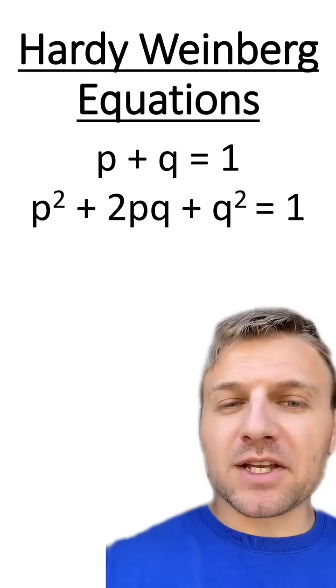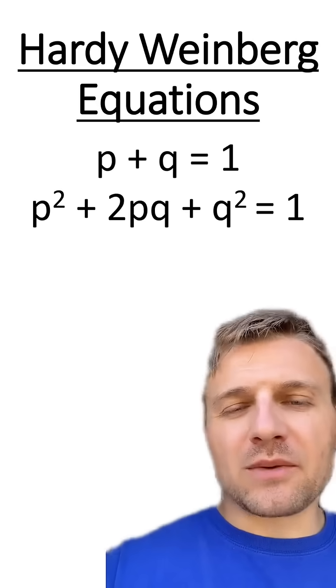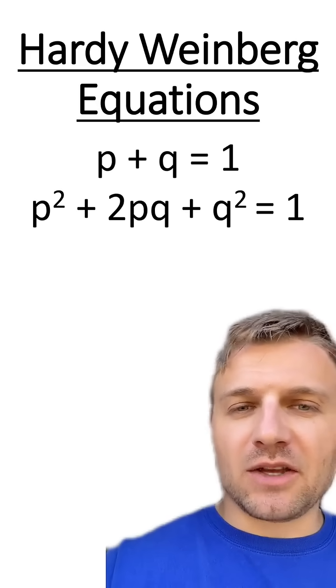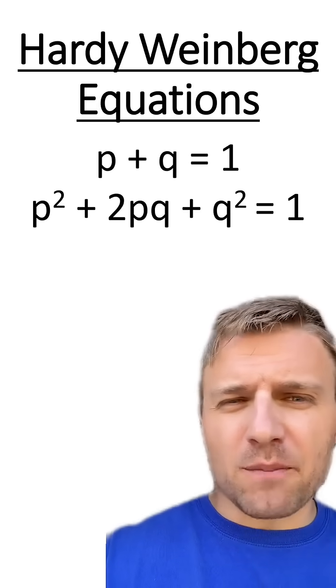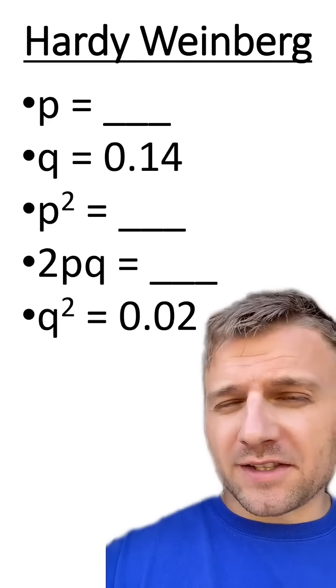Now, it's time to use these equations. Remember that p plus q equals 1, or the frequency of the dominant and recessive allele is going to equal 100%. So if we know q, we can figure out p. Remember, we already know what q is. It's 0.14.